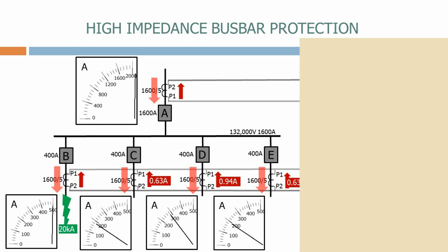Let's look first at incomer A. The primary current is the fault current which is 20,000 amps plus the original load current of 800 amps, equals 20,800 amps. Putting that into our equation, the secondary current now equals 65 amps.